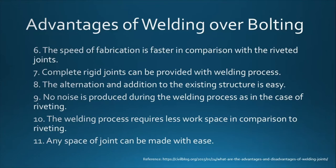Seventh, complete rigid joints can be provided with the welding process. For example, in a beam-to-column connection where you want rigidity, welding is required — bolts alone cannot achieve it. Eighth, alteration and addition to existing structures is easy. Ninth, no noise is produced during the welding process as in the case of riveting. Tenth, the welding process requires less workspace compared to riveting. And last, any shape of joint can be made with ease.